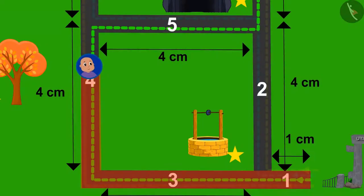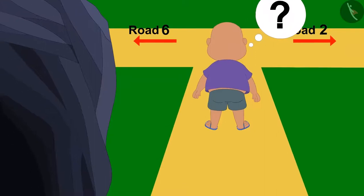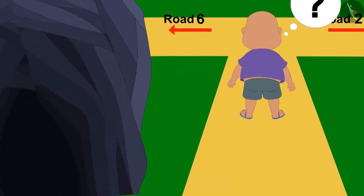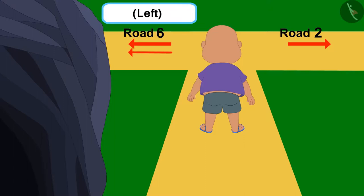Bablu crossed road number 4 in fear and also walked on road number 5 and has come to an end of it. Now, Bablu is thinking which way he has to turn. Can you tell us which direction Bablu has to turn from the unique cave to road number 6? Absolutely right. Towards left.